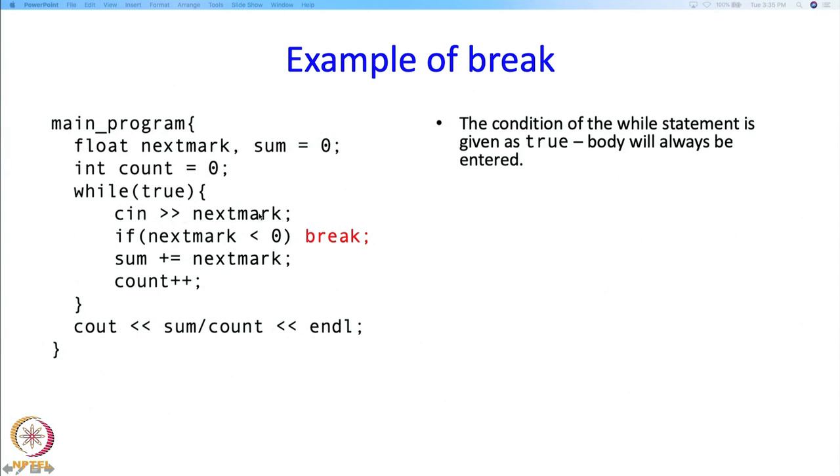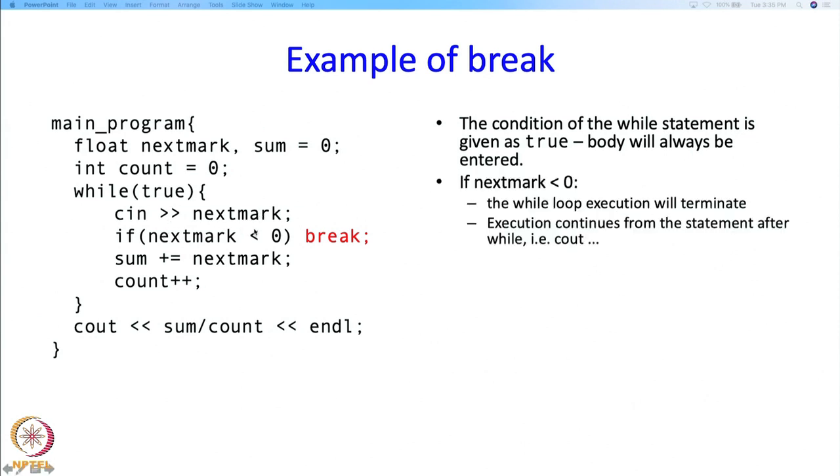The next statement is if next mark less than 0. So if next mark less than 0, then there is the break statement, which means that the loop will terminate. The execution of the while statement will terminate and you will come to this point and execute the statement. So remember that that was exactly what you wanted. If next mark was less than 0, next mark was signalling the condition that no more input will be given, and therefore you want the average to be calculated and printed.